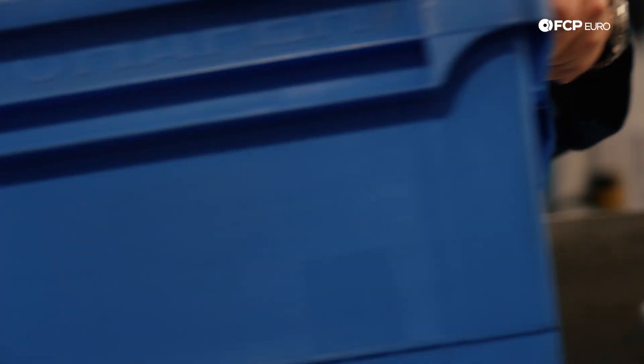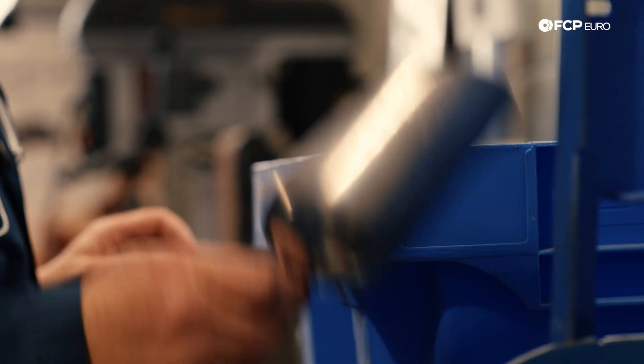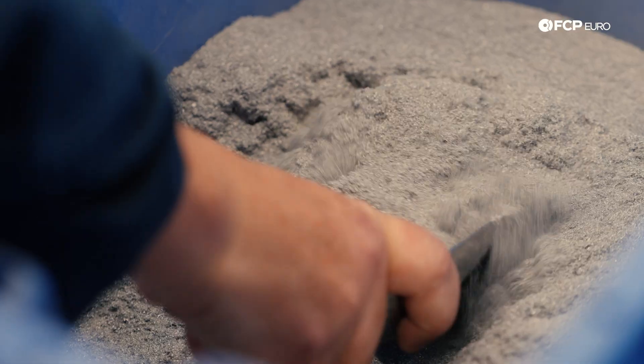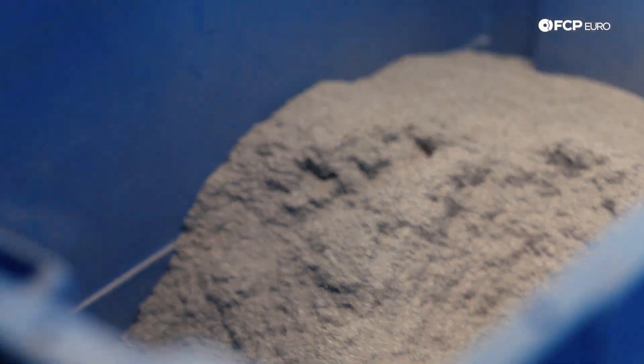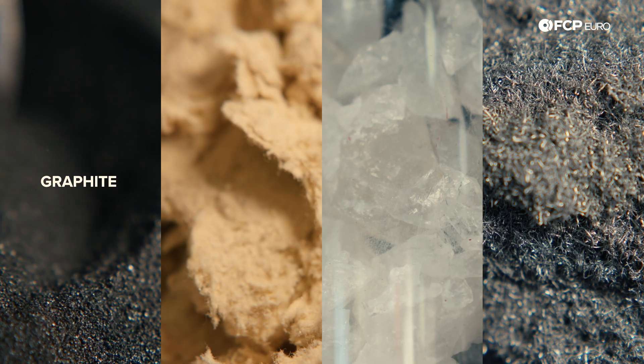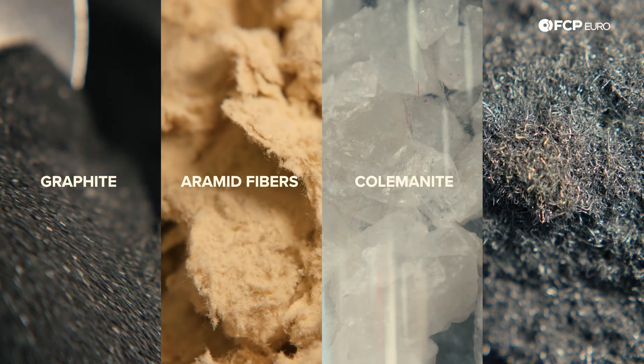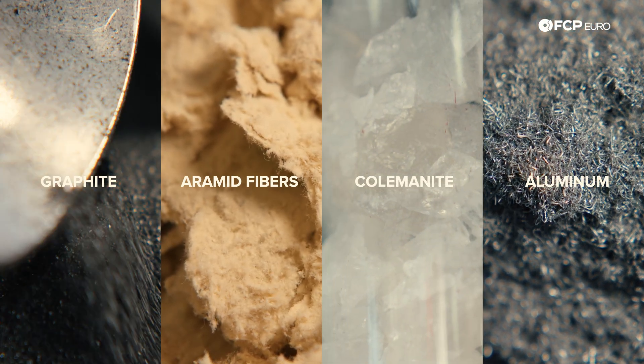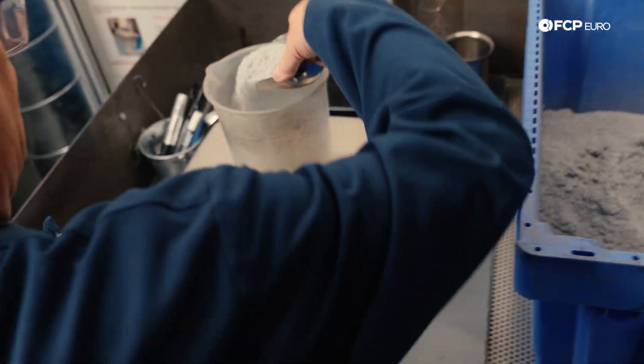This process is a lot like creating a cake recipe. It first starts with measuring out specific amounts of four primary raw materials amongst many others to reach the desired performance: graphite, aramid fibers, colmanite, and aluminum. Each is responsible for a completely different parameter within the compound blend.